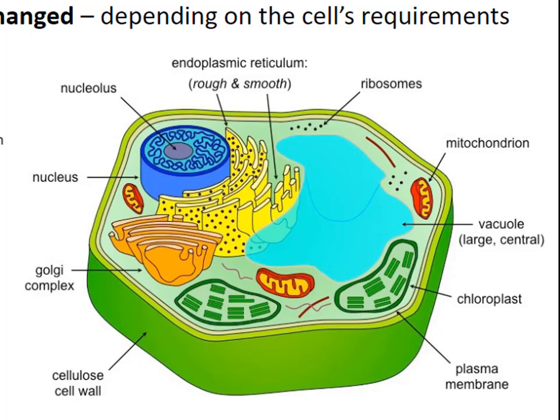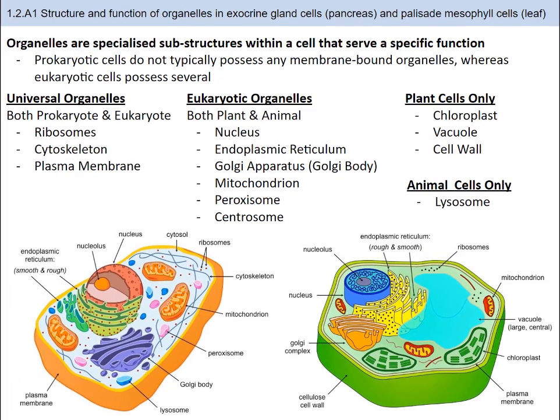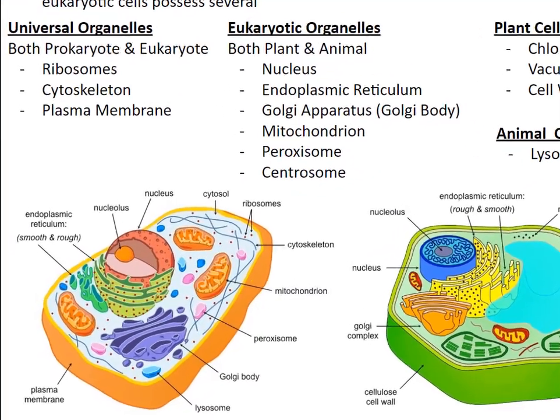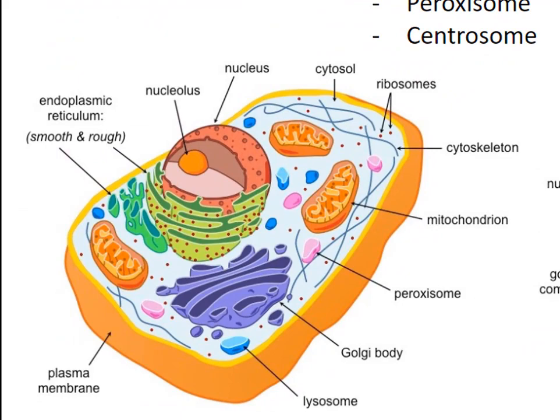This compartmentalization makes eukaryotic cells much more differentiated, specialized, and efficient. Let's discuss the different organelles and their functions. Some organelles are shared by both prokaryotic and eukaryotic cells: ribosomes, the site of polypeptide synthesis during translation, made of two subunits — 70S in prokaryotes and 80S in eukaryotes; the cytoskeleton, a filamentous scaffolding within the cytoplasm providing internal structure and mediating intracellular transport; and the plasma membrane, a phospholipid bilayer embedded with proteins that is semipermeable and a selective barrier surrounding the cell. We will learn more about the plasma membrane in sections 1.3 and 1.4.